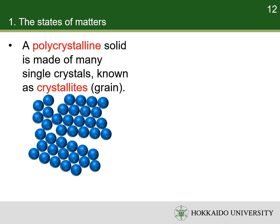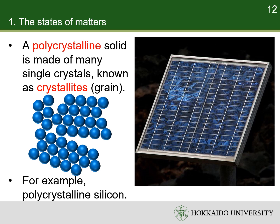Solid objects that are large enough to see and handle are rarely composed of a single crystal, but instead are made of many single crystals, known as crystallites. Such materials are called polycrystalline. Almost all common metals, and many ceramics, are polycrystalline. For example, most solar panels are made of polycrystalline silicon. The textures observed in polycrystalline silicon result from the different refractive indices of crystallites with different orientations.